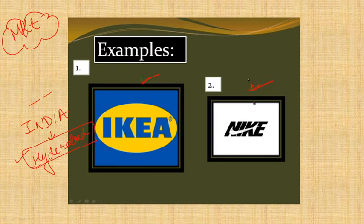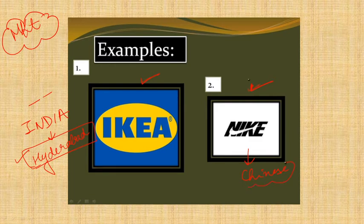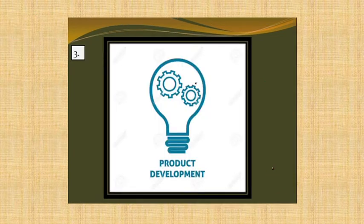The second example for market development is Nike and Adidas. They offer the same products in every market but expand to new demographics. Both Nike and Adidas have moved into the Chinese market to capture a new customer base.